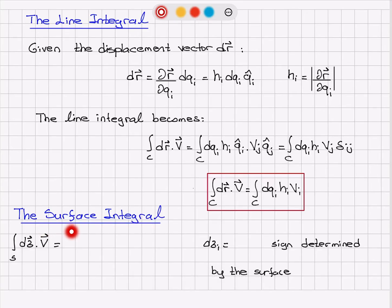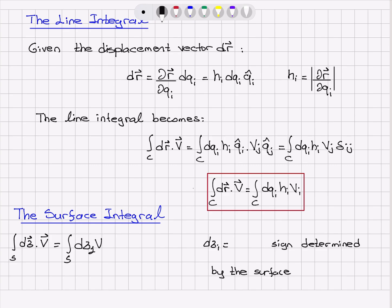Now we will look at the surface integral — d sigma dot product with v. Here d sigma is our differential area vector, and we have to consider all the area vectors that belong to this surface. So this will be d sigma_1 v_1 plus d sigma_2 v_2 plus d sigma_3 v_3.